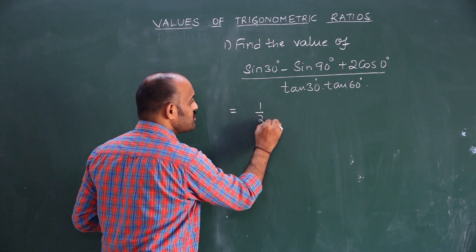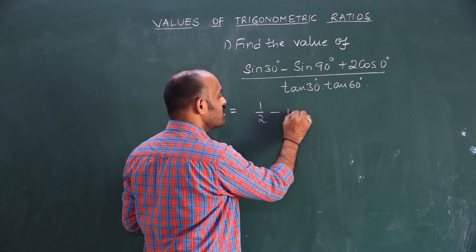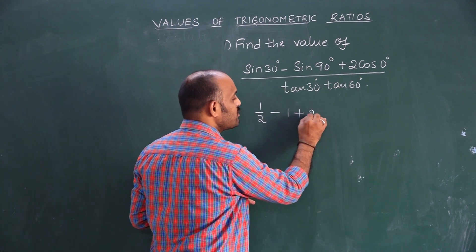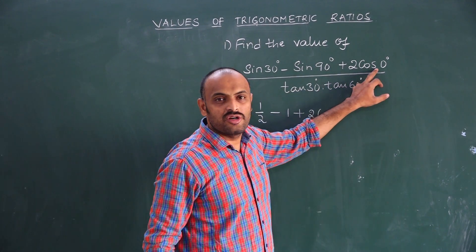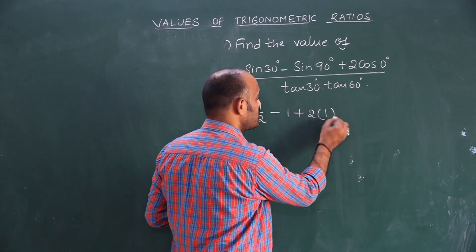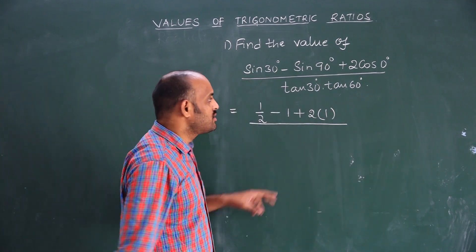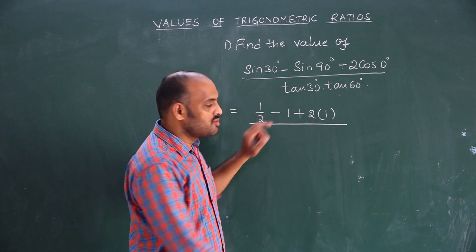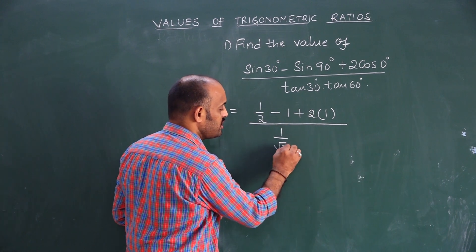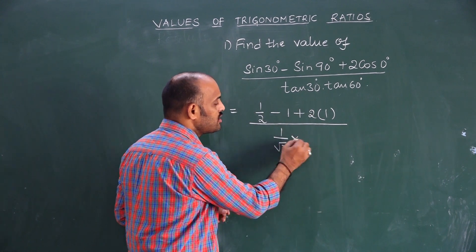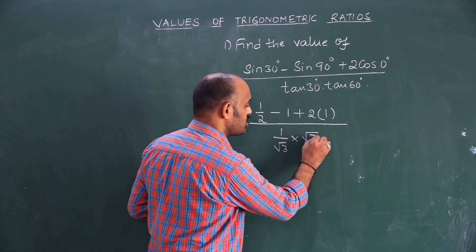Sin 30 degrees is half. Sin 90 degrees value is 1. Plus 2 times of cos 0 degrees value, which is 1. The whole expression is divided by tan 30 degrees value, which is 1 by root 3, multiplied by tan 60 degrees value, which is root 3.